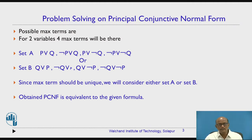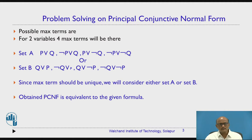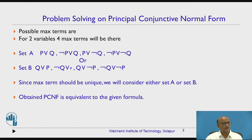Let us recap the max terms. For two variables there are four max terms. They are from set A: P or Q, negation P or Q, P or negation Q, negation P or negation Q. Set B is the commutative of set A. So for two variables there are only four max terms, and in a PCNF it will be a product of one to all four max terms. Our objective is to identify which are those max terms from set A.